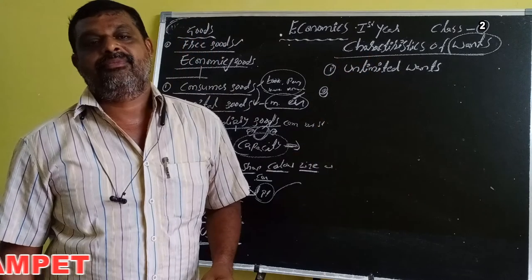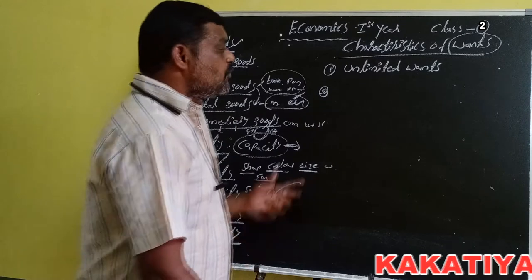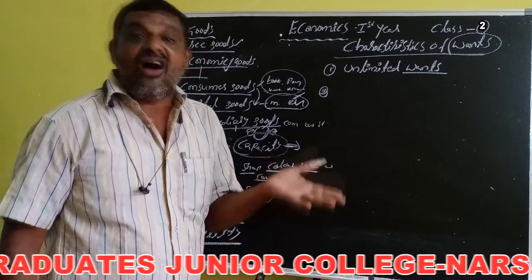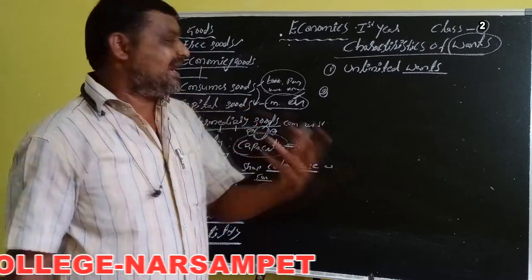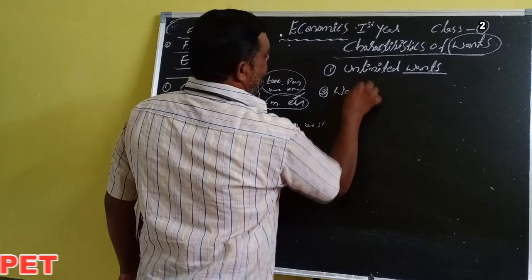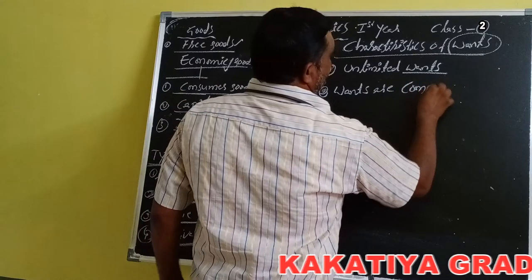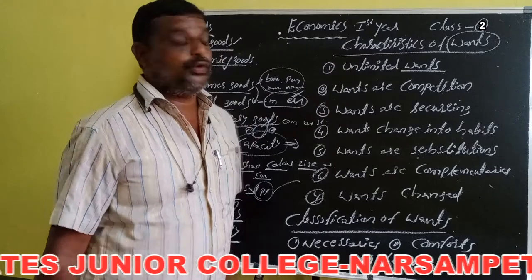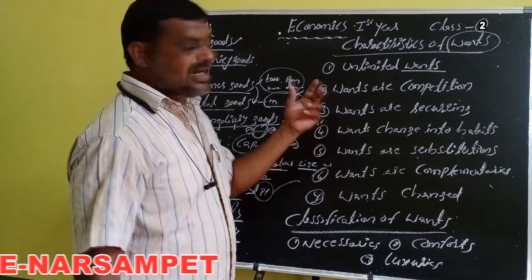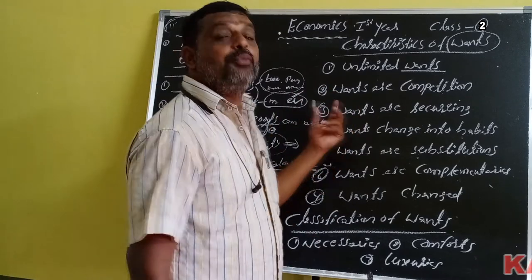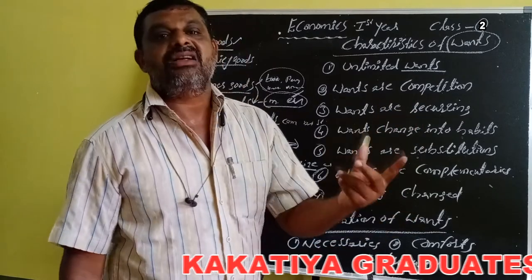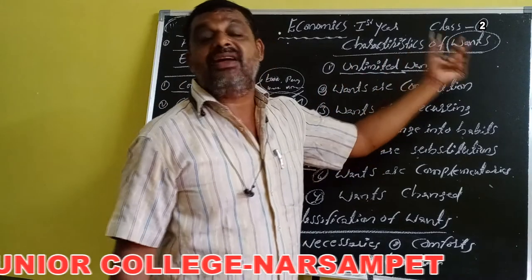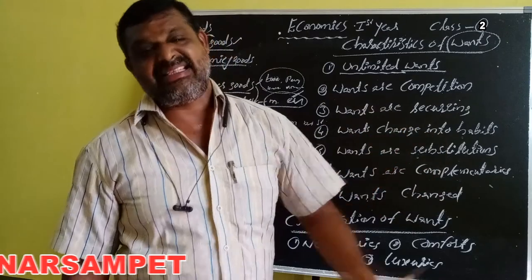Human wants are uncountable. If a person satisfies one want, after some time another want arises. Human wants are unlimited and untouchable — if you satisfy one want, another want arises or grows up.